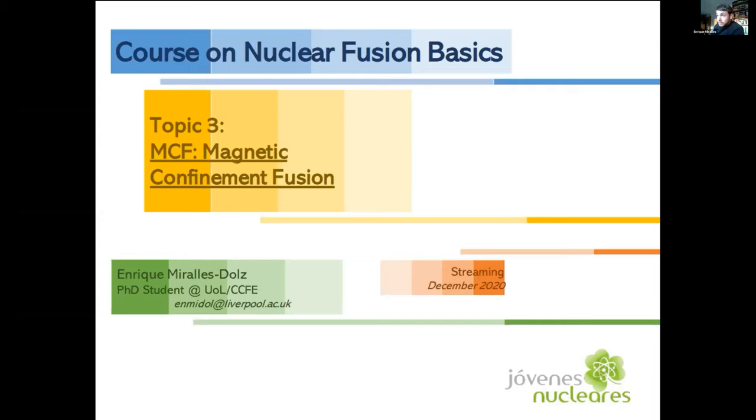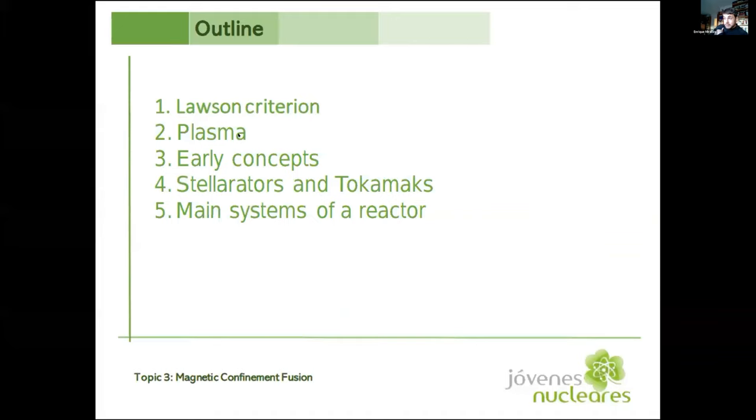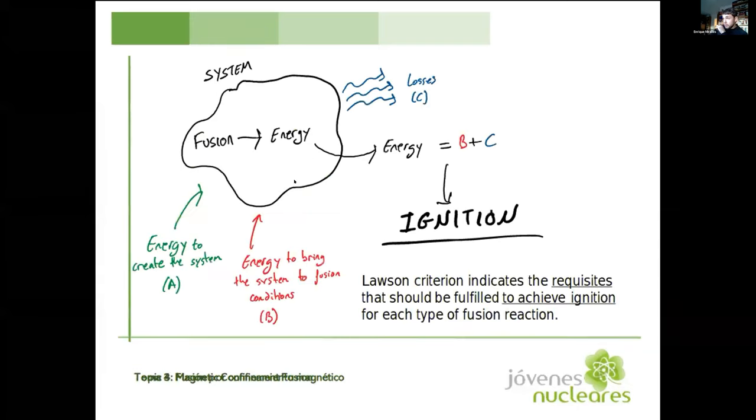I'm going to talk about magnetic confinement fusion. I will go through the basics of magnetic confinement, and then I will try to explain the two main concepts that we have here on Earth, and then some of the main systems of a reactor. The general idea is that we want to have a system where some fusion reactions are happening inside, and then some energy is being produced.